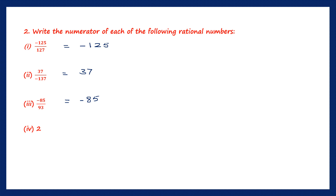For the fourth one, we just have a whole number 2 and we've been asked to write the numerator. To make it a fraction without changing the value of 2, I give it the denominator 1. So 2 by 1 is still 2, and my numerator is 2. For the fifth one, 0 — I can also give it the denominator 1. Zero by 1 is 0, so the numerator is 0.